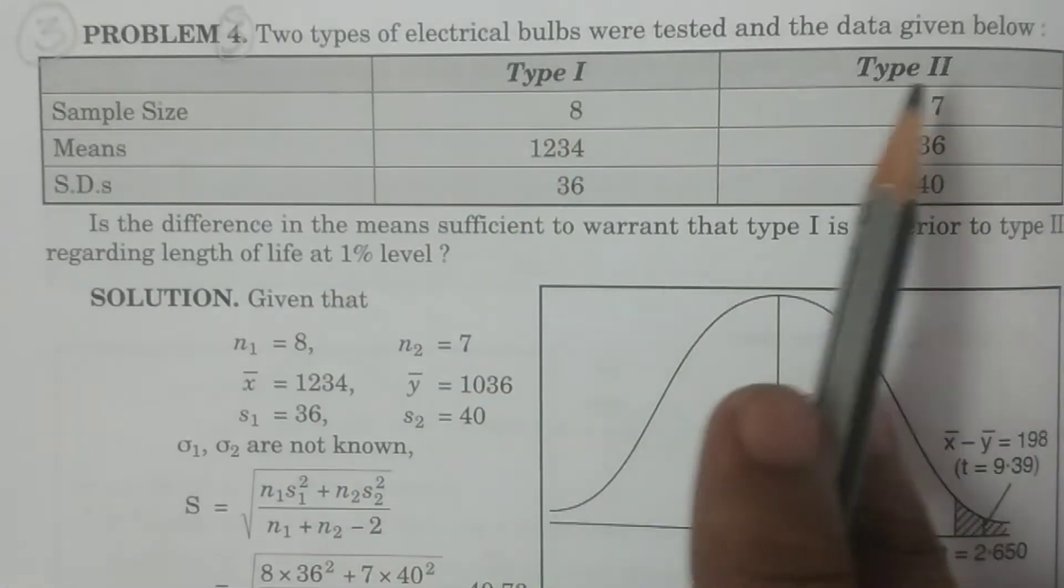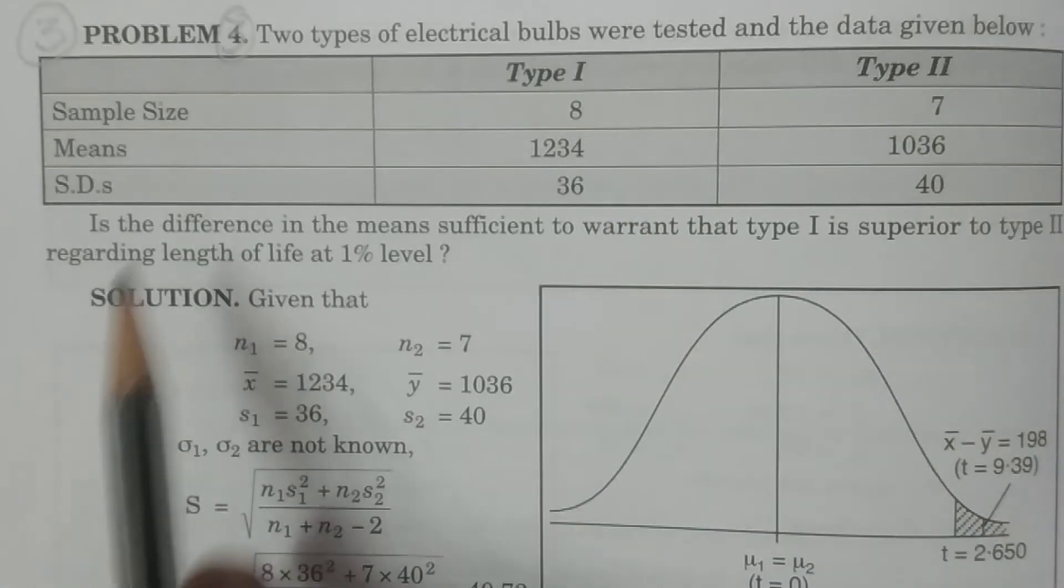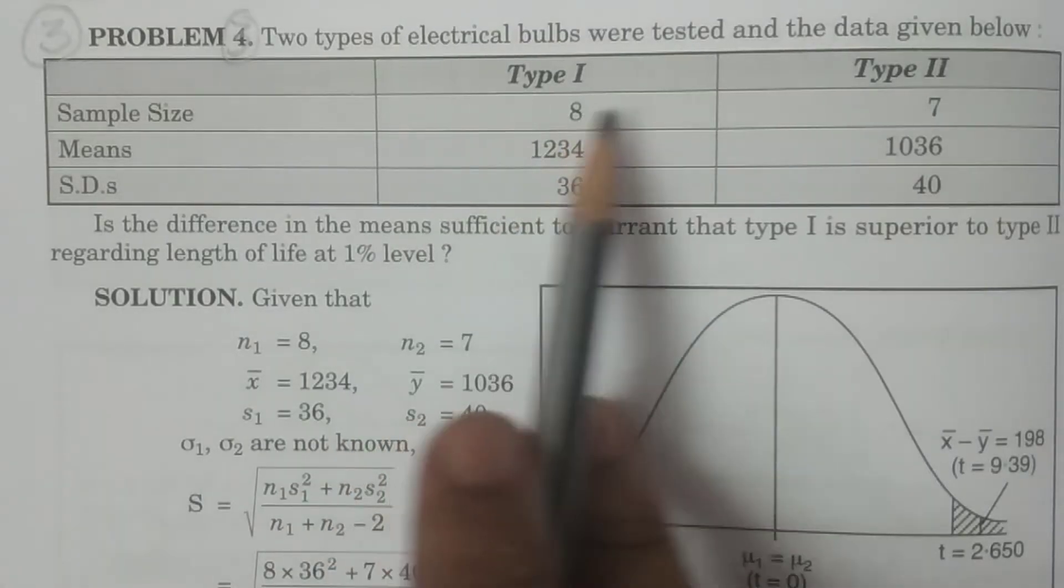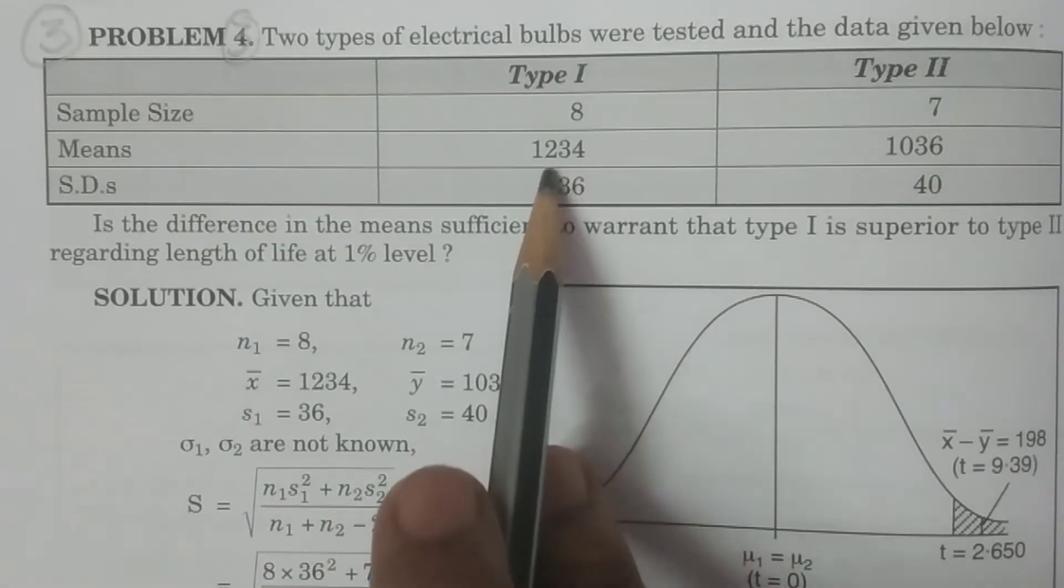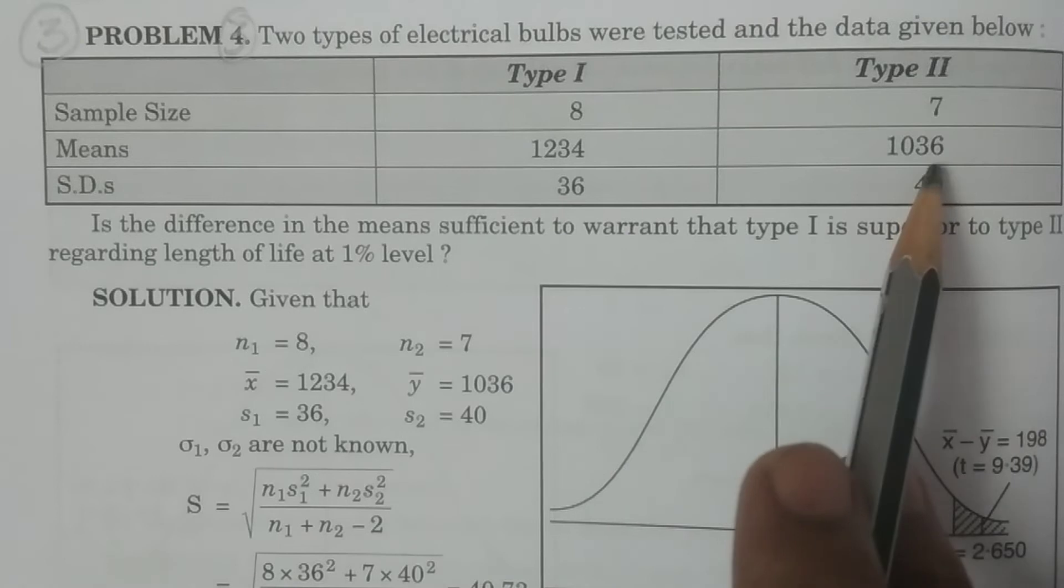So this is the data, Type 1 and Type 2, two types of bulbs. Sample size 8 and 7, means 1234 and 1036.